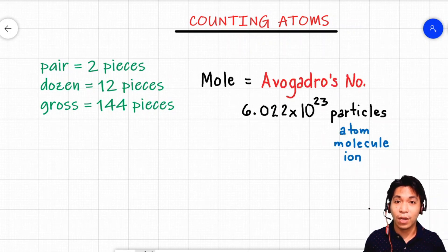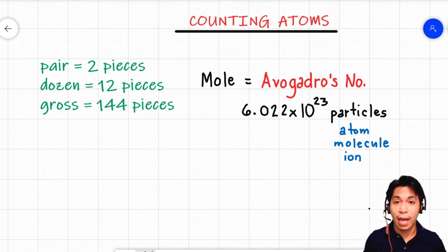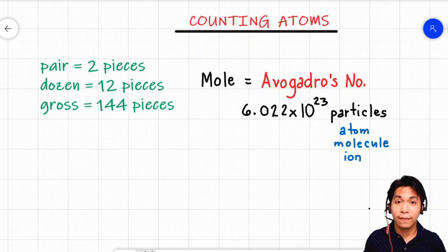A mole is equal to Avogadro's number, which is equal to 6.022 times 10 to the 23rd particles. Remember that these particles can be atoms, molecules, or ions. In order for you to visualize what 6.022 times 10 to the 23rd particles is, let us identify how many zeros are in that figure.